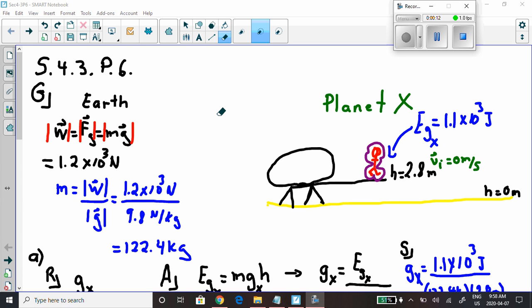The whole situation here is that there's this astronaut and they tell us what the weight of the astronaut is on Earth. So the weight, or the force of gravity, here's the equation for it on Earth is 1.2 times 10 to the 3 Newtons.